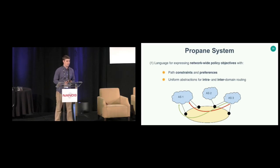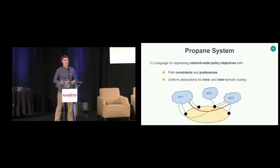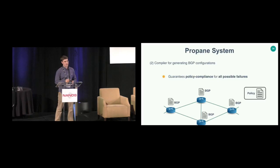Propane has two components. First, a language where you describe your network-wide routing policy in terms of path constraints and preferences — you can say things like 'I prefer traffic leaves my network through one peer over another' or 'traffic should never go through some autonomous system.' You use the same language to write both intra- and inter-domain routing policy. Second, the compiler generates BGP configurations, taking the centralized policy and breaking it down into a distributed implementation. The guarantee it makes is that, modulo compiler bugs, you have policy compliance — it always does what the centralized policy intended for all possible combinations of failures.